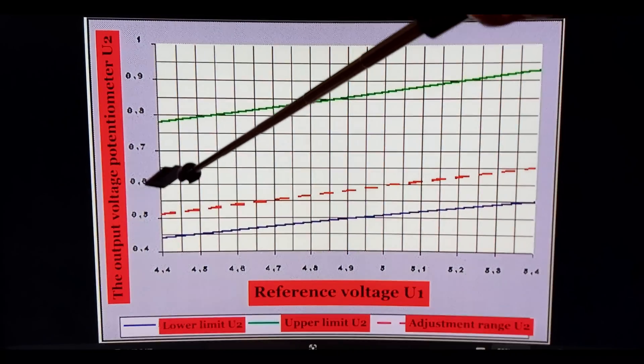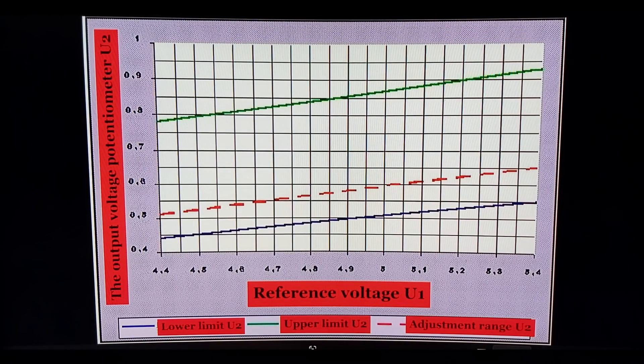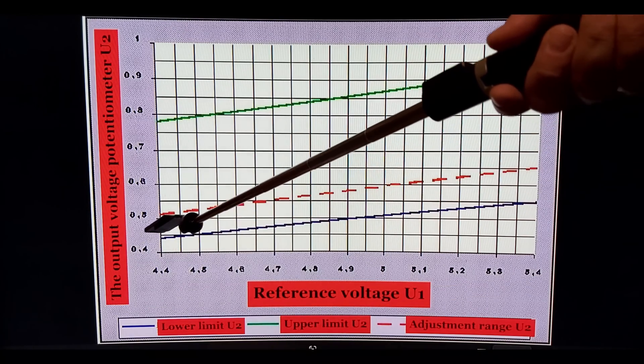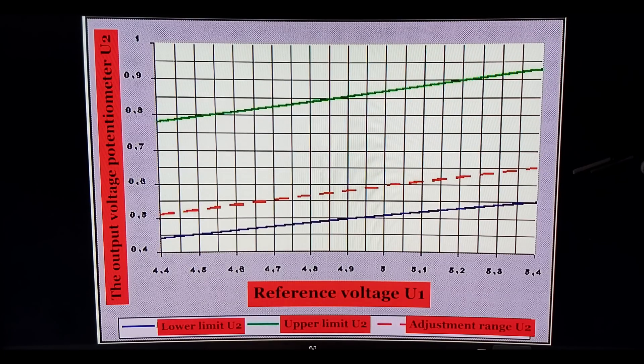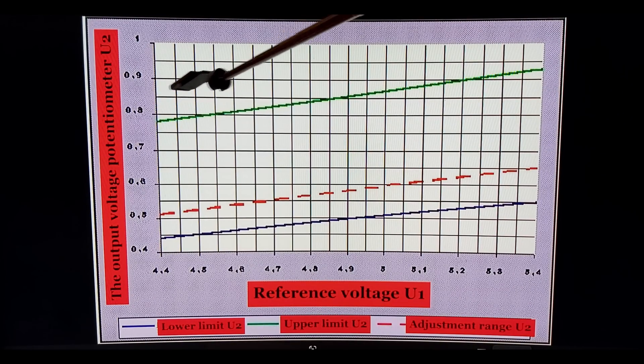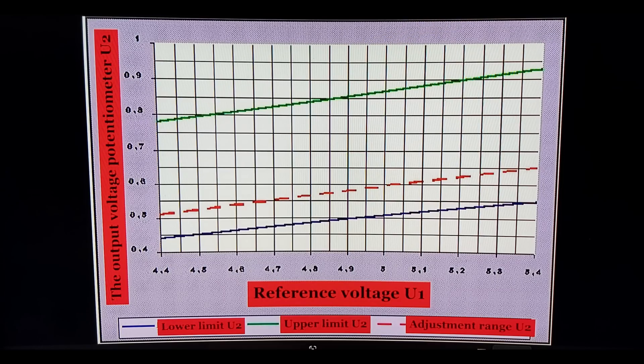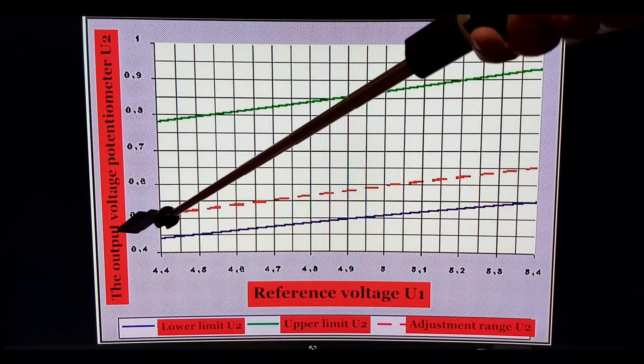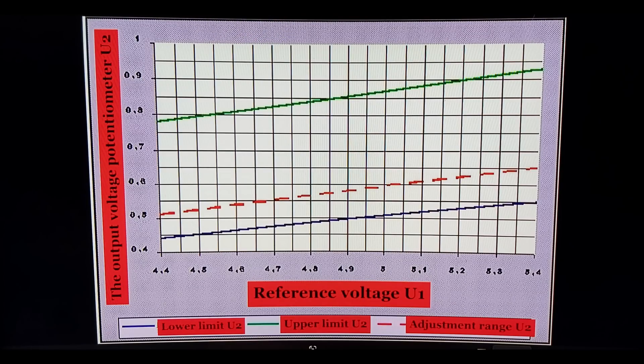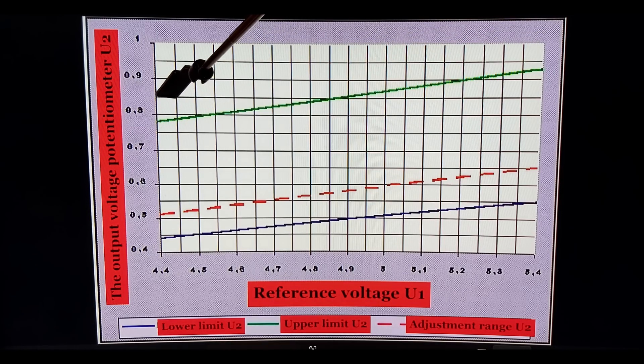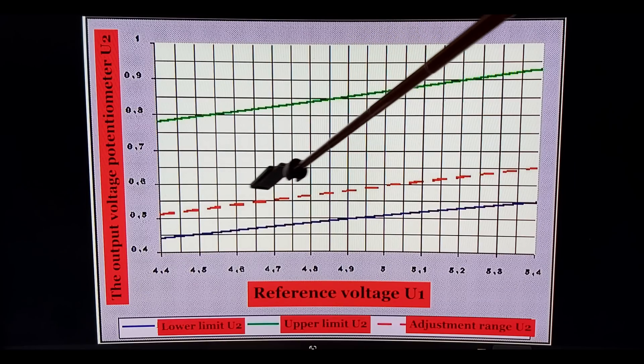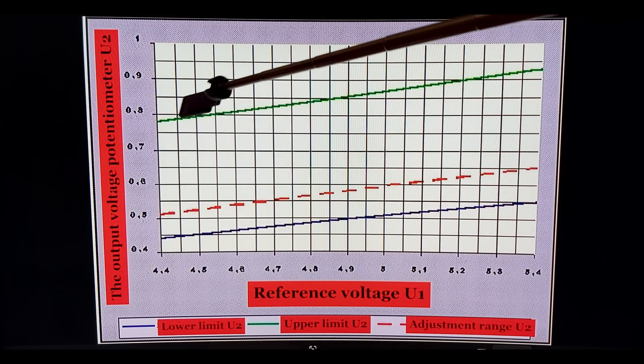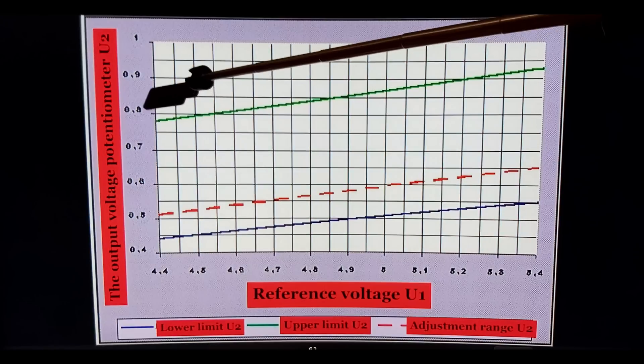It says 0.4, 5, 6, 7, 8, 9, and one whole volt. What we see here: this blue line is the lower limit of the voltage on the potentiometer which we measure. The green one is the upper limit on the second contact on the potentiometer. And this dashed red one is the adjustment range, the value of your potentiometer U2.